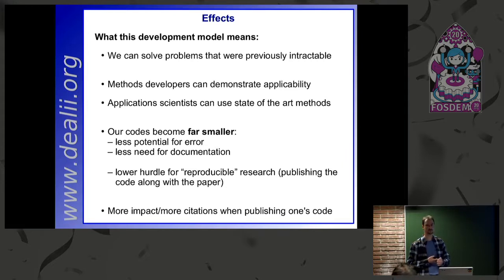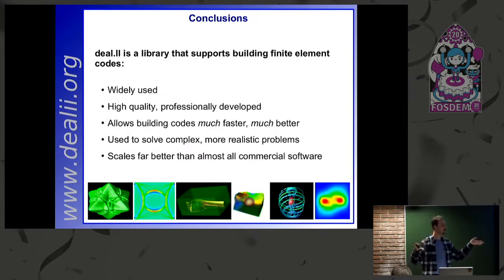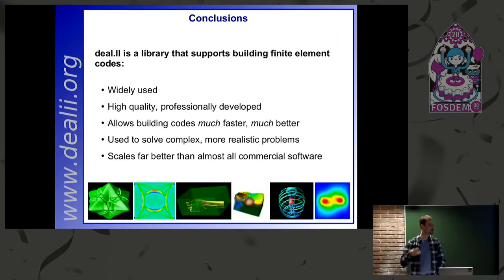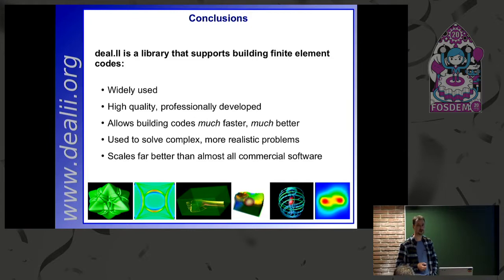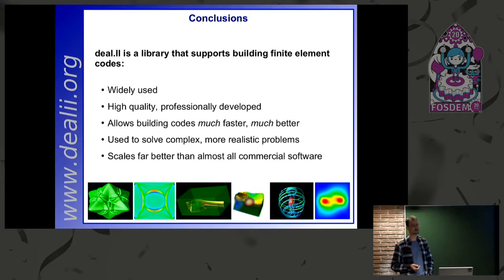In the numerical mathematics community, this means we can develop methods and demonstrate they're actually useful for real applications, as opposed to just solving the Laplace equation on the unit square. To sum up: deal.II is one of three or four widely used, high-quality finite element libraries developed by professionals. It allows building codes that are substantially faster and more accurate than commercial tools, and in particular applicable to problems for which there are no commercial tools.